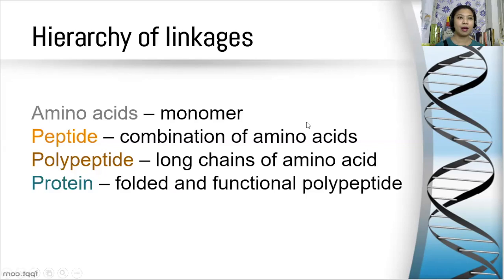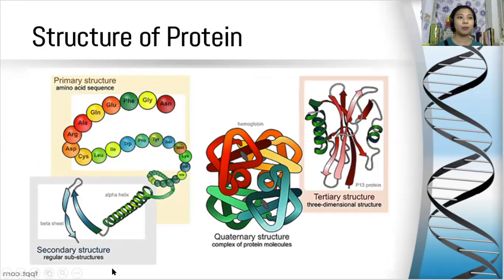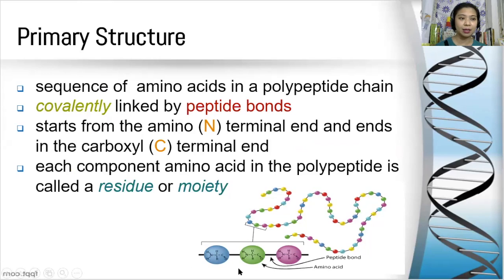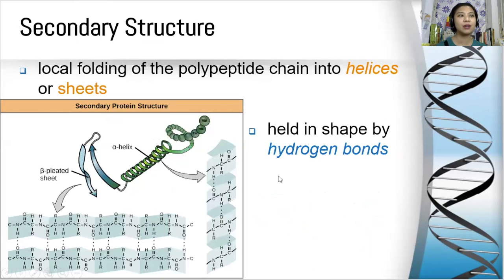Now let's look at the structures of protein. We have the primary structure, the secondary structure, the tertiary structure, and the quaternary structure. The primary structure refers to the linear polypeptide chain, which does not achieve any folding state. By convention, the primary structure starts from the amino terminal end and ends at the carboxyl terminal end. Each component amino acid in the polypeptide is called a residue. The secondary structure refers to local folded structures that form within a polypeptide due to interactions between atoms on the backbone.